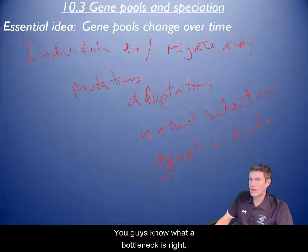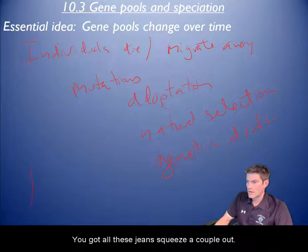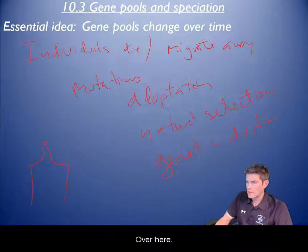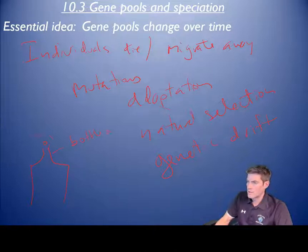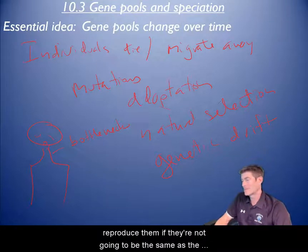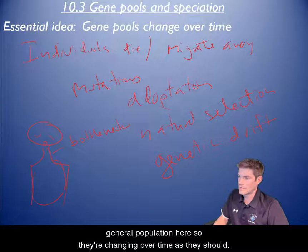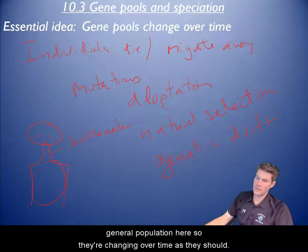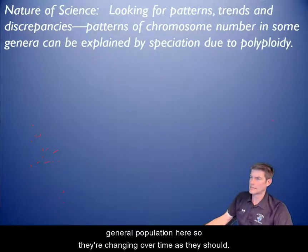You guys know what a bottleneck is, right? You got all these genes and you just squeeze a couple out over here. If you take those individuals that just squeezed out and then reproduce them, they're not going to be the same as the general population, so they're changing over time as they should.